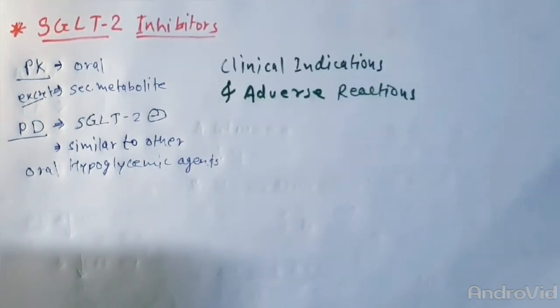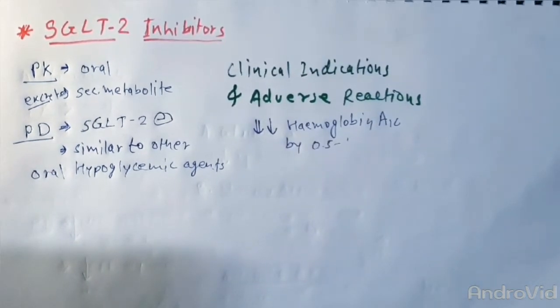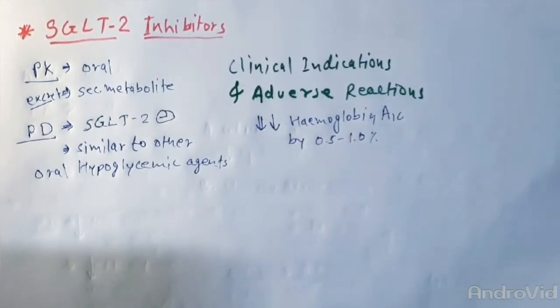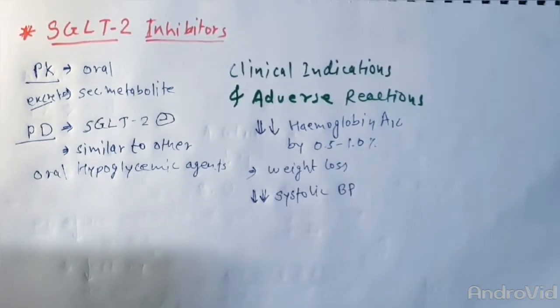That's why it acts similar to other oral hypoglycemic agents. Talking about their clinical indications and adverse reactions, they reduce hemoglobin A1C by 0.5 to 1%. These drugs can result in weight loss and can also induce a drop in systolic blood pressure.